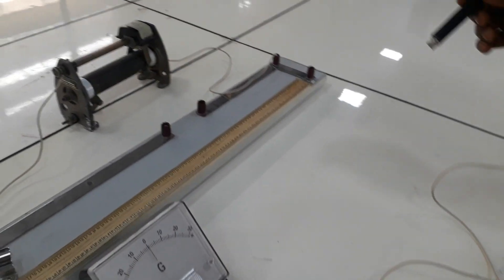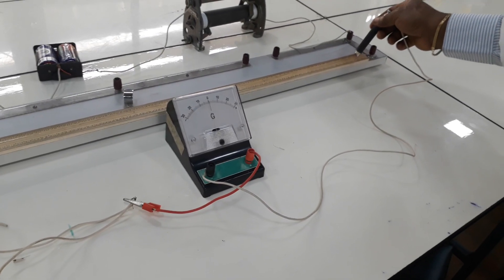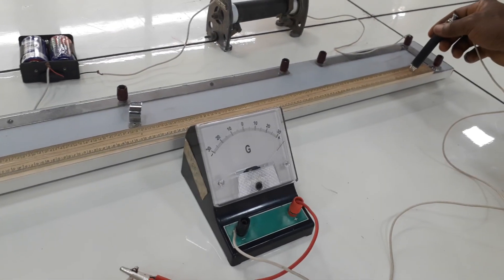First of all, let me determine the direction of flow of current by looking at my galvanometer and then touching the Constantin wire. You can see that it has deflected to the right.